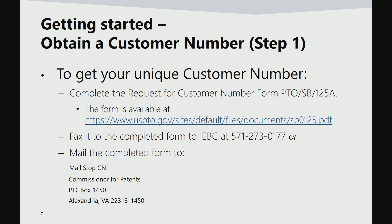The form may be faxed to 571-273-0177, or may be mailed to the EBC using the address listed at the top of the form. The address is: Mail Stop CN, Commissioner for Patents, PO Box 1450, Alexandria, VA 22313.